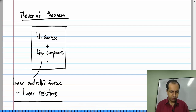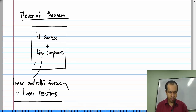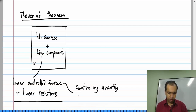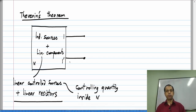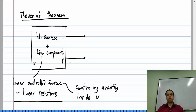One restriction is that the controlled sources be controlled by quantities inside this block. Let me call this N — the controlling quantity, whether it is voltage or current, is inside this network N, and we have two terminals available to us. Let me call this 1 and 1 prime. This is a common scenario: it could be a power supply where inside there is a complicated circuit, but you have two terminals — positive and negative — or an amplifier, where there is a complicated circuit but you can only make connections to it. You cannot modify the inside of the circuit, and it is very common to have just a pair of terminals.